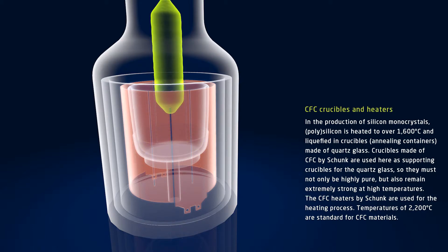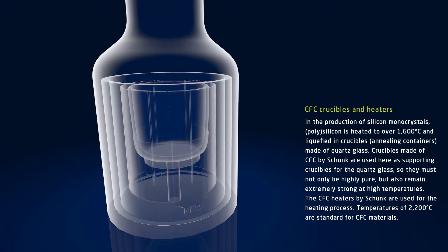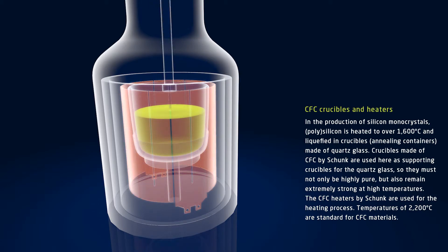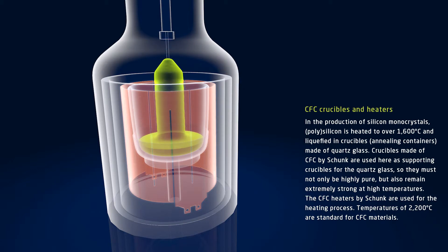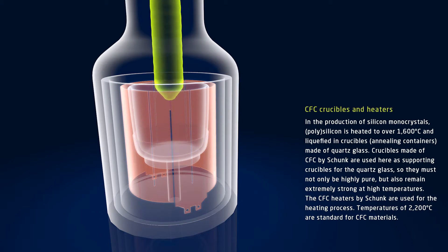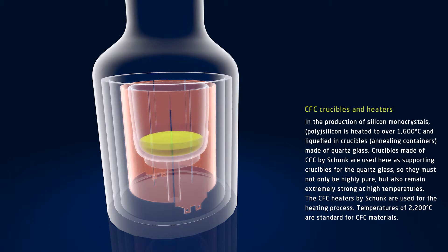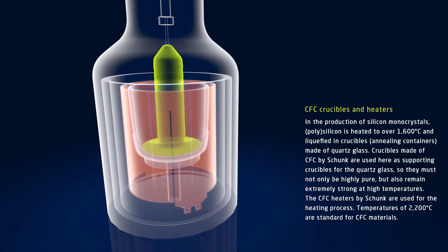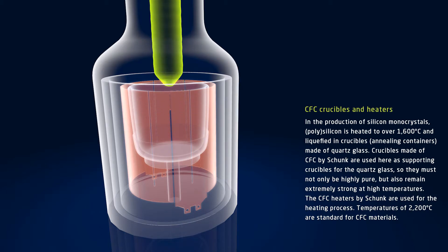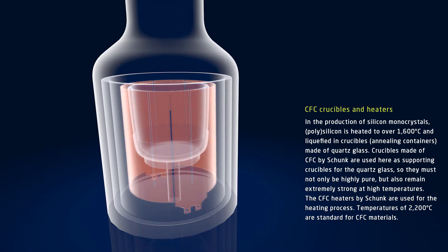Not only must these crucibles be extremely pure, so that the silicon is not contaminated, they must also retain extraordinary strength at high temperatures. In addition, CFC heaters by Schunk are used for the heating process. Temperatures of 2200 degrees Celsius do not pose any problems for the CFC materials.